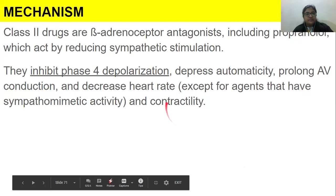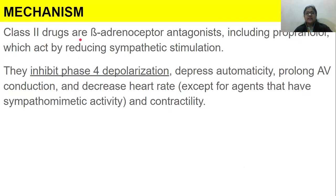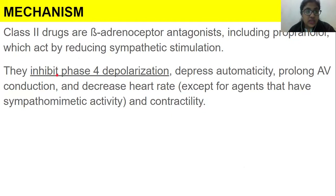Class 2 drugs are beta receptor antagonists, including propranolol, which act by reducing sympathetic stimulation. They inhibit phase four depolarization, depress automaticity, prolong AV conduction, and decrease heart rate. In just two lines, many important terminologies are used, which are critical for understanding this class of drug.